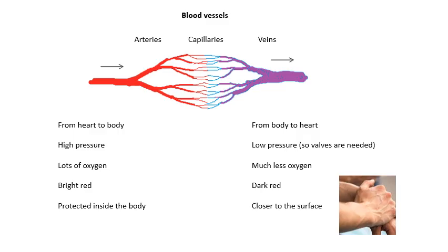Arteries and veins — what are the differences? Arteries go away from the heart, from the heart to the body. The blood is high pressure because it's been pumped by the heart. It has lots of oxygen. The thing on the red blood cells which carries the oxygen is called haemoglobin. When it's bonded with oxygen, oxyhaemoglobin is a bright red colour.